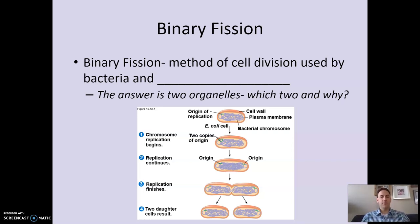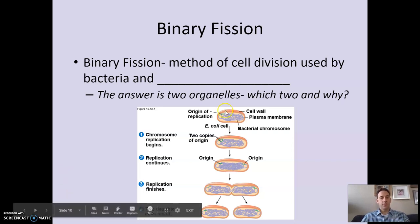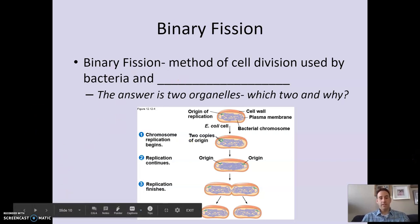I want to look first at cell division in prokaryotic cells and then in eukaryotic cells. In prokaryotic cells, they use a process called binary fission. Binary fission is used by bacteria and also by two organelles in eukaryotic cells — the mitochondria and chloroplasts. The endosymbiotic theory suggests those organelles descended from bacteria, and during cell division they actually divide on their own using binary fission, just like modern bacteria.